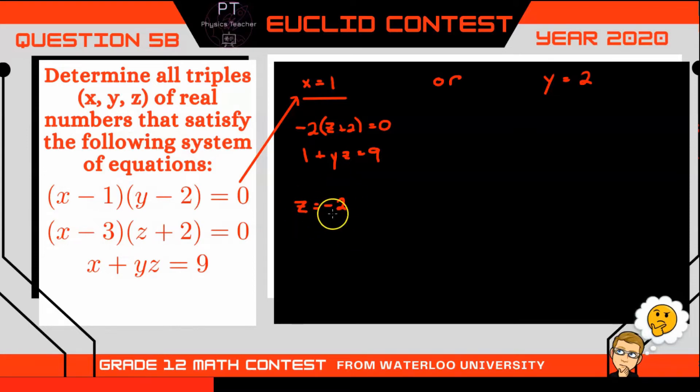So if z is equal to negative 2, then we can continue on with this third equation. Substituting z as negative 2, we get 1 plus y times negative 2 is equal to 9.